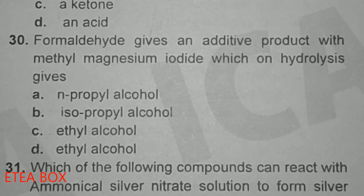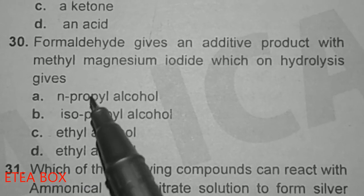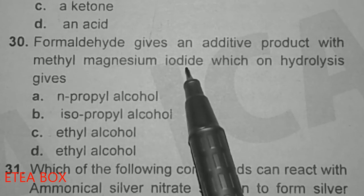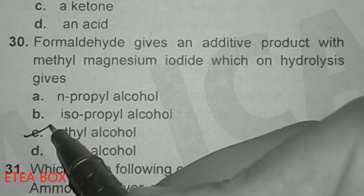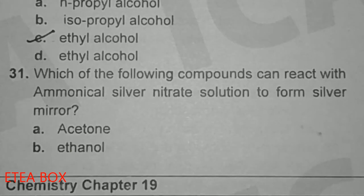Question 30: Formaldehyde gives an addition product with methyl magnesium iodide (a Grignard reagent), which on hydrolysis gives a primary alcohol. When formaldehyde reacts with methyl magnesium iodide, it gives ethyl alcohol.